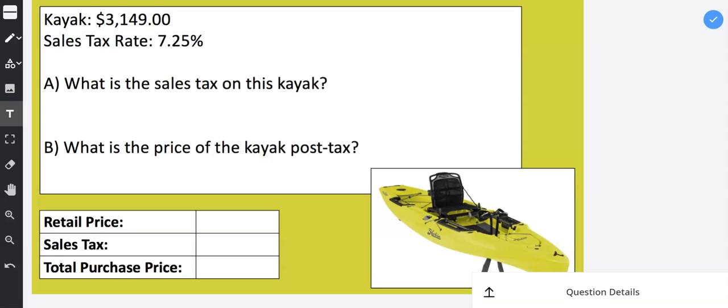Take a look at this next example. In this example we're buying a kayak for $3,149 so this is a very nice kayak.